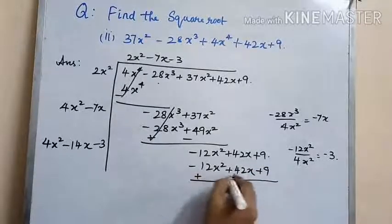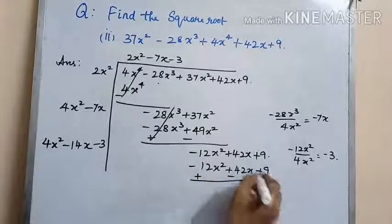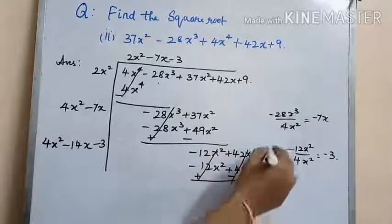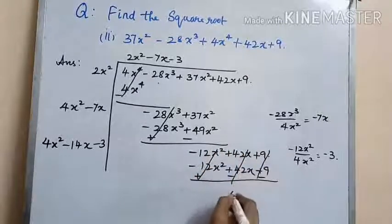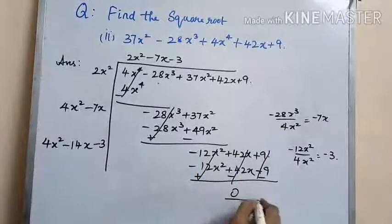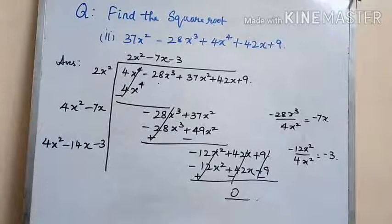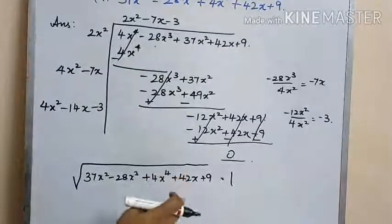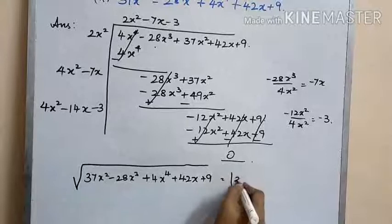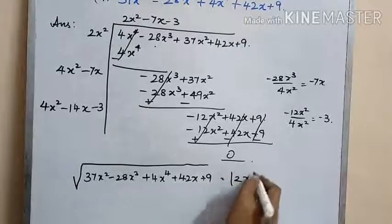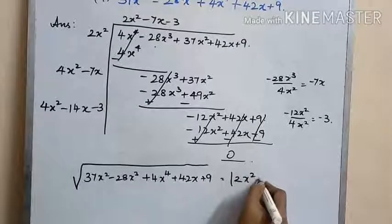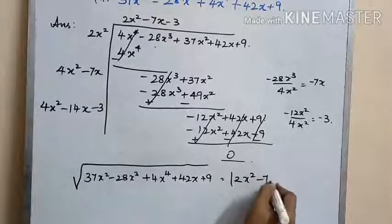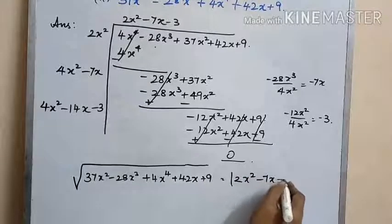Changing the signs we get 0 as a remainder. So the given polynomial is a perfect square and the square root of this polynomial is 2x squared minus 7x minus 3.